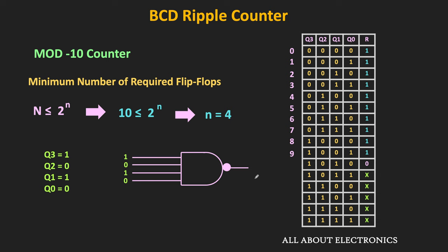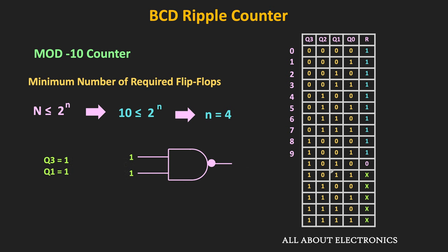But if you closely observe, there is no need to apply all 4 inputs. In fact, if we just connect Q3 and Q1 to the NAND gate, the circuit will still work. Because before 1010, both Q3 and Q1 are not 1 at the same time. Up to 1001, the NAND gate output remains 1. When the count goes to 1010, both Q3 and Q1 become 1, causing the NAND gate to generate logic 0 for the clear inputs. So just by connecting Q3 and Q1 to the NAND gate, we get the desired output sequence.